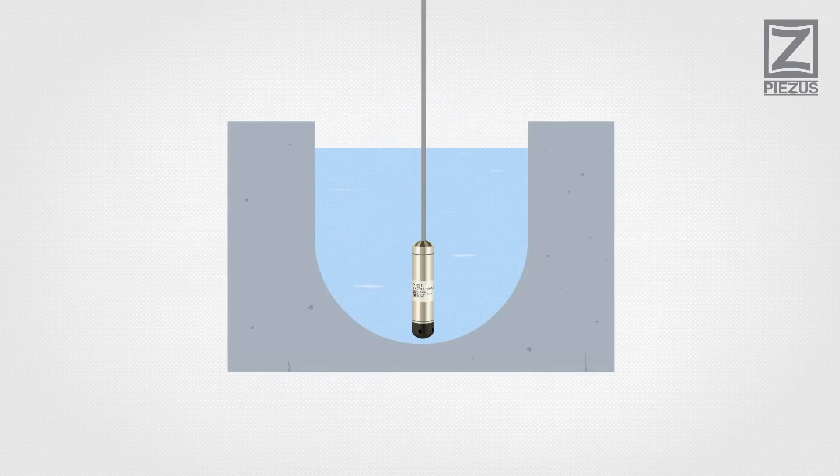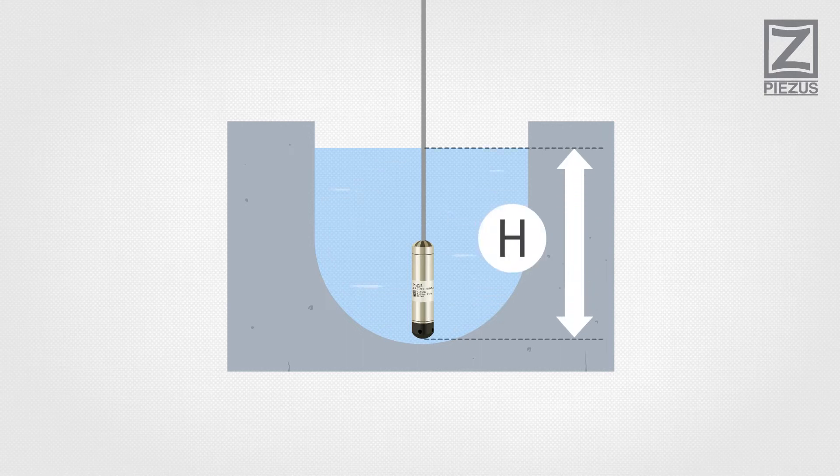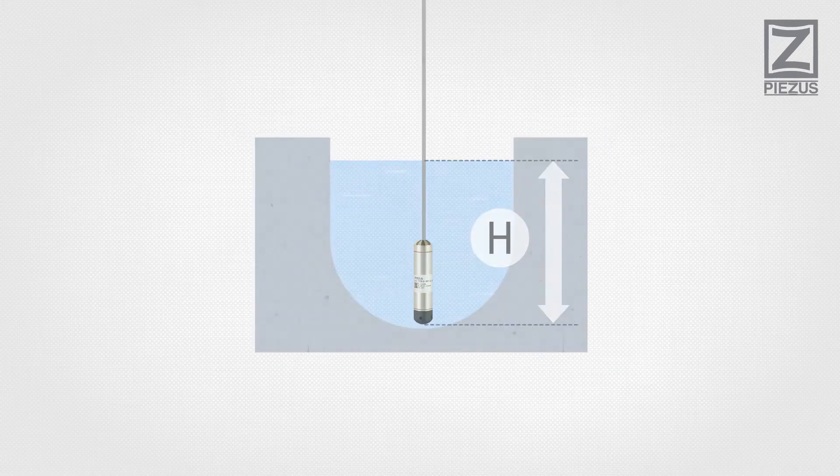Submersible pressure transmitters are used to measure level of liquids. They are also called hydrostatic level transmitters.